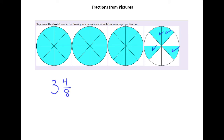Unless you're otherwise told, you want to always give answers as reduced fractions or mixed numbers. So it's not good enough to leave this answer as three and four eighths. We recognize that four and eight have a common factor of four, so we divide top and bottom by four, and we get our mixed number answer as three and one half.